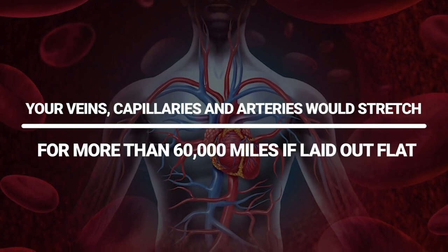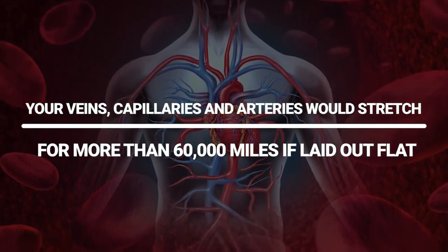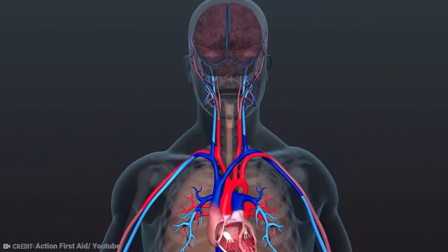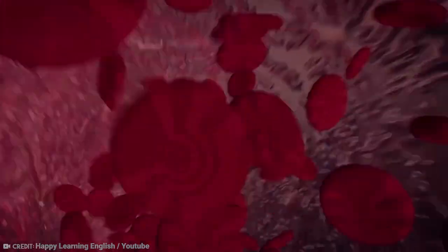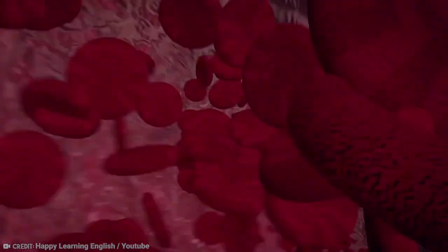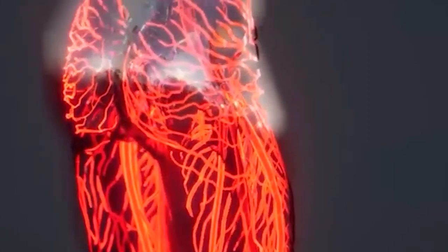Your veins, capillaries and arteries would stretch for more than 60,000 miles if laid out flat. When your heart beats, it pumps blood through your circulatory system made up of blood vessels called arteries, capillaries and veins. Every region of your body receives blood from these blood vessels.